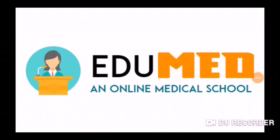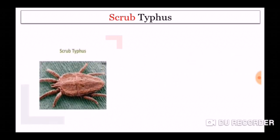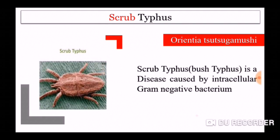Welcome to Edumet. Today we are discussing about Scrub Typhus. Scrub Typhus is also known as bush typhus. It is a disease caused by an intracellular gram-negative bacterium, Orientia tsutsugamushi.